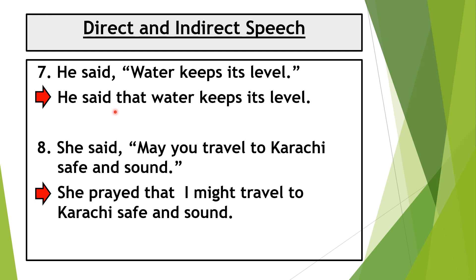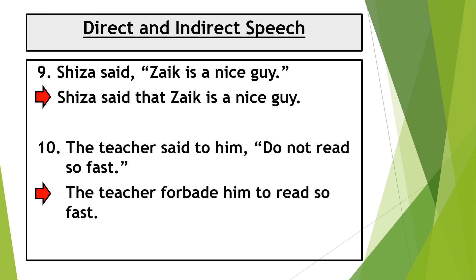She said, may you travel to Karachi safe and sound. This is an optative sentence showing prayers. The answer is: she prayed that I might travel to Karachi safe and sound. The ninth statement was: Shiza said, Zach is a nice guy. This is an assertive sentence. The answer is: Shiza said that Zach is a nice guy.